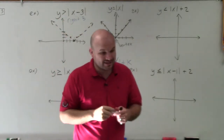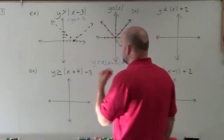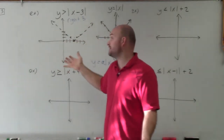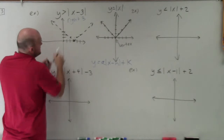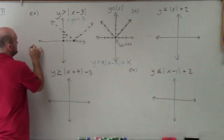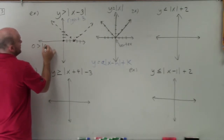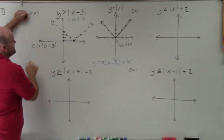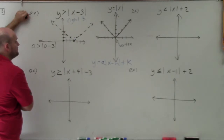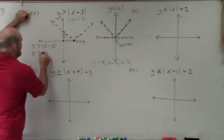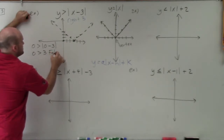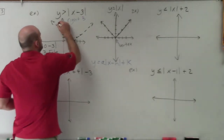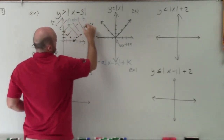Now, the test point can be very helpful. We want to pick a test point that's not on the graph — the best choice is (0, 0). So I have: 0 is greater than absolute value of 0 minus 3. That gives absolute value of negative 3, which is 3. So 0 is greater than 3 — that is false. Since that point is false, all the points below my boundary line are going to be false, and all the points above it are going to be true.